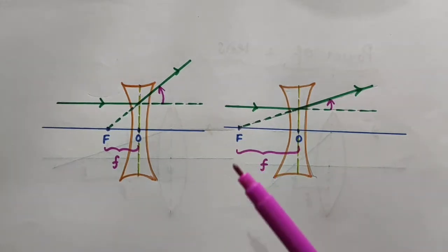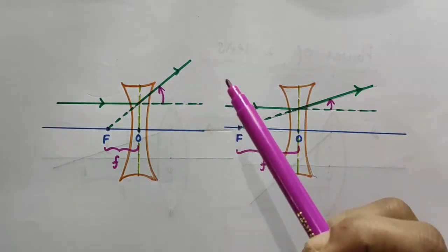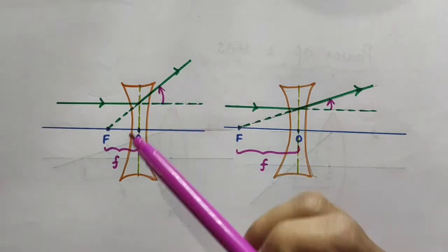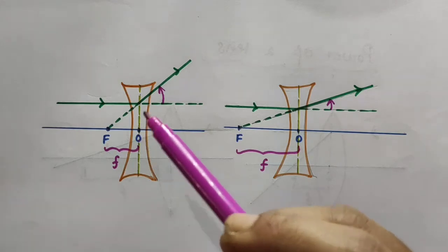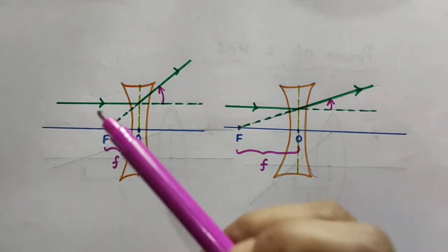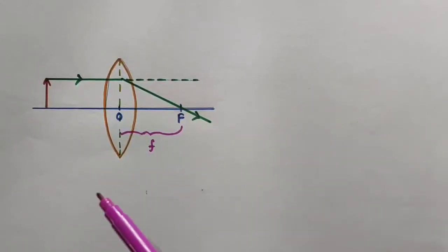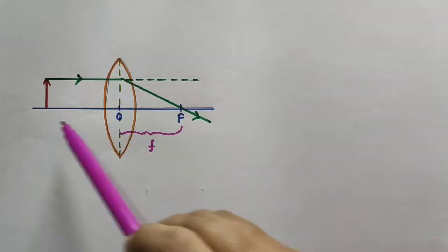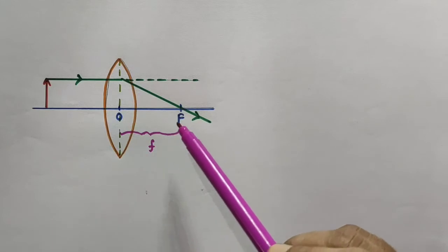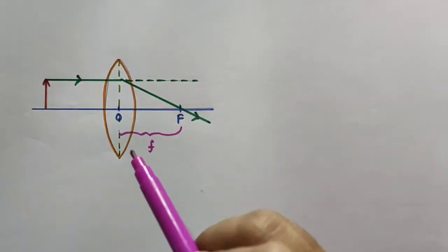The power of a lens is defined as the tangent of the angle by which it converges or diverges a beam of light falling at unit distance from the optical center of the lens — converges in the case of a convex lens, diverges in the case of a concave lens. Consider the example of a convex lens: O is the optical center, this is the principal axis, F is the principal focus, and f is the focal length — the distance between O and F.